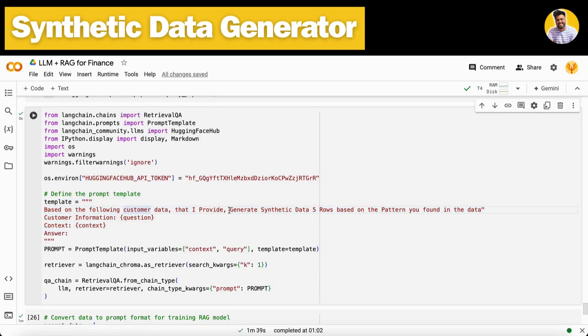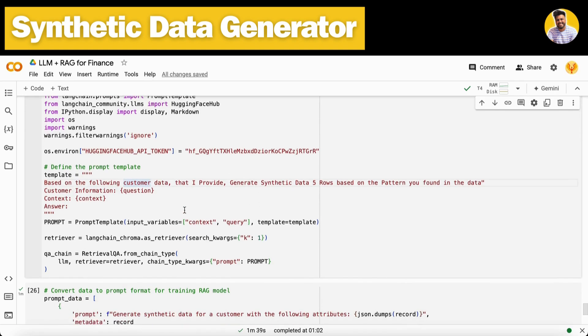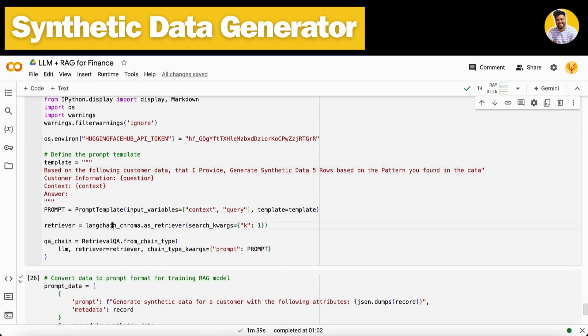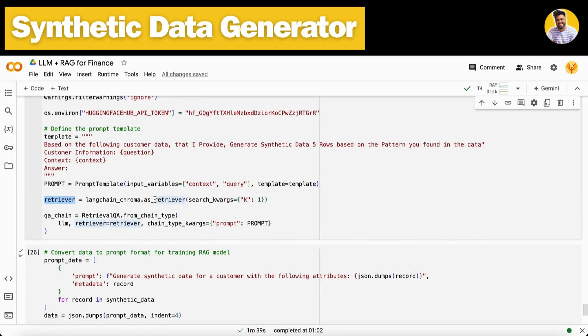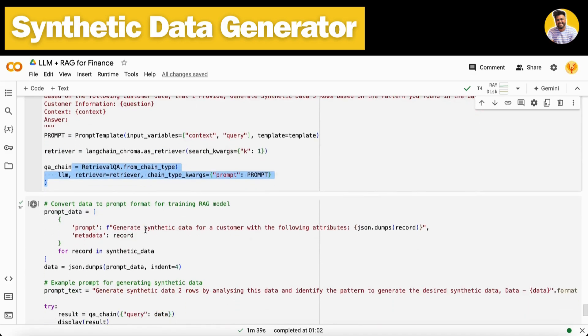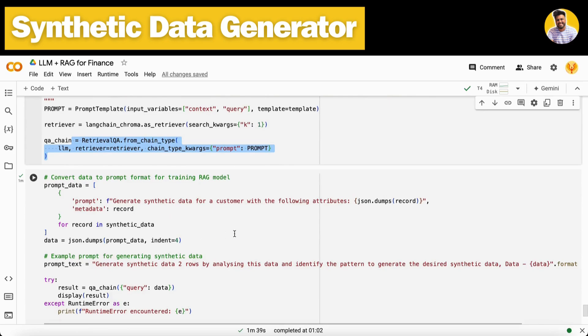Then I built this RAG QA chain with a template that says based on the following data, generate synthetic data—five rows. Based on that, I use ChromaDB above as a retriever to retrieve the top most thing that's matched with the data I provide to it, and then it generates the response.